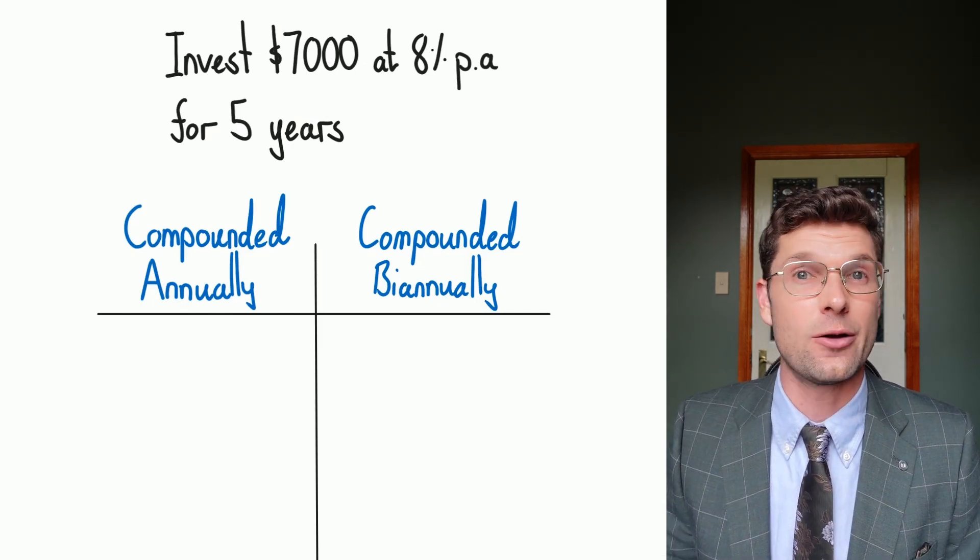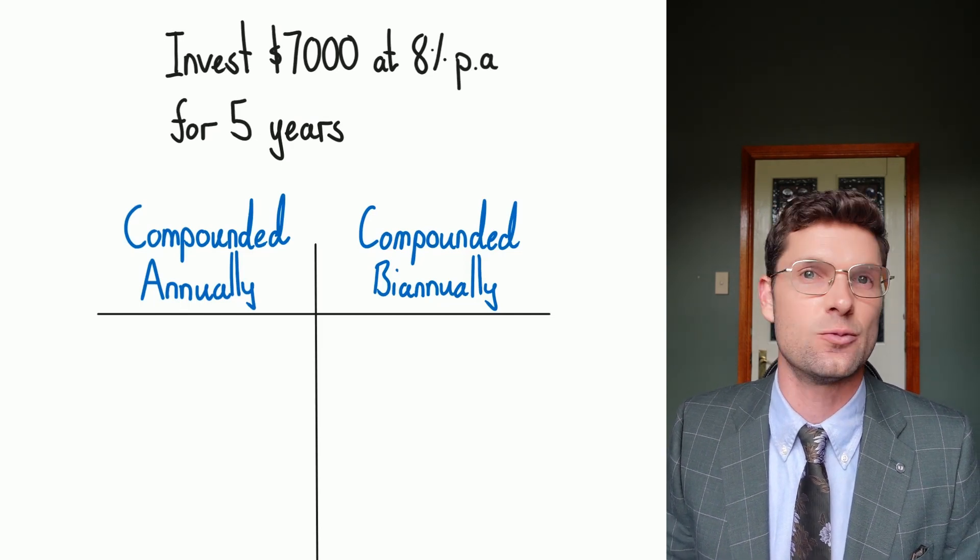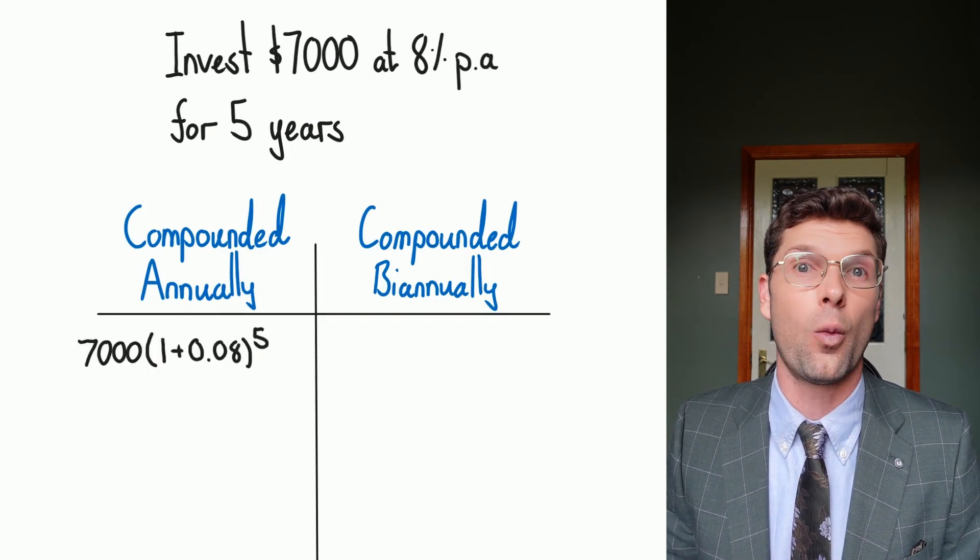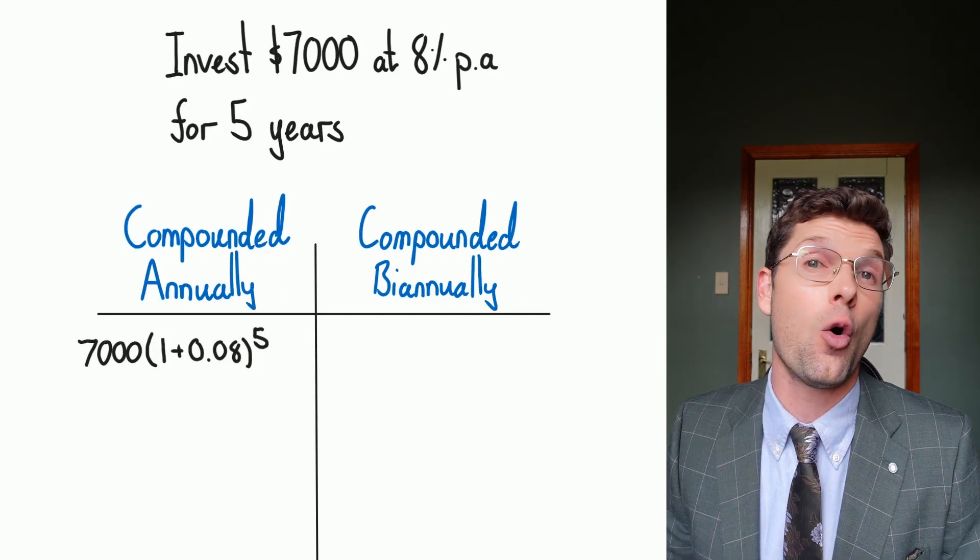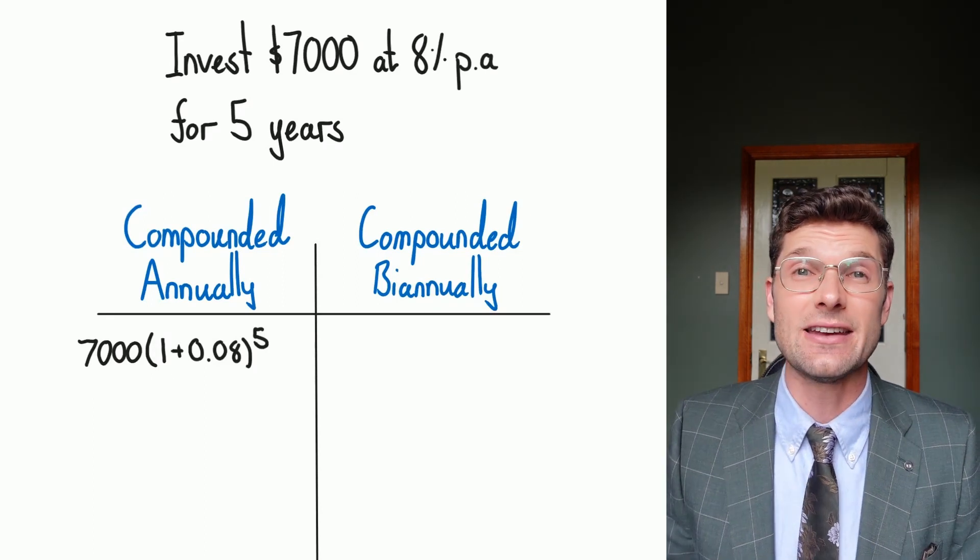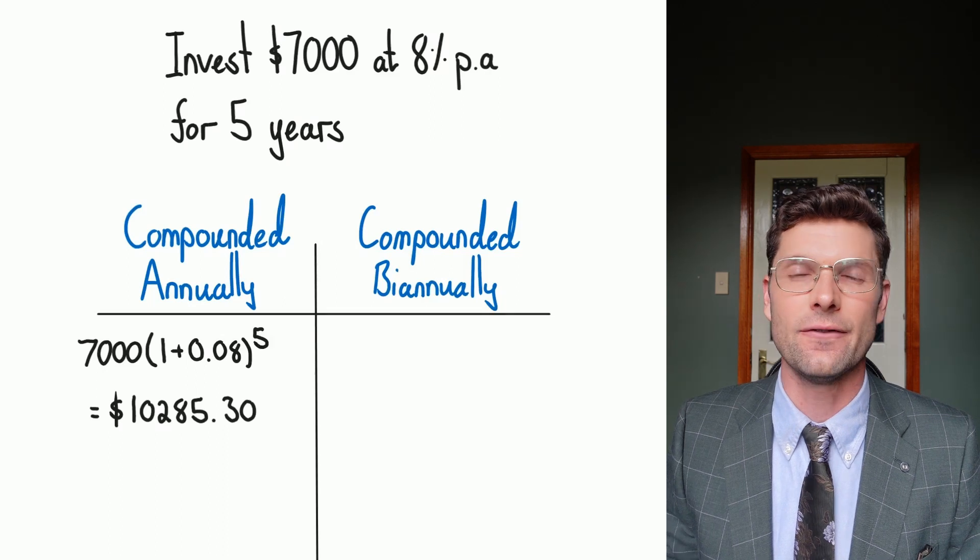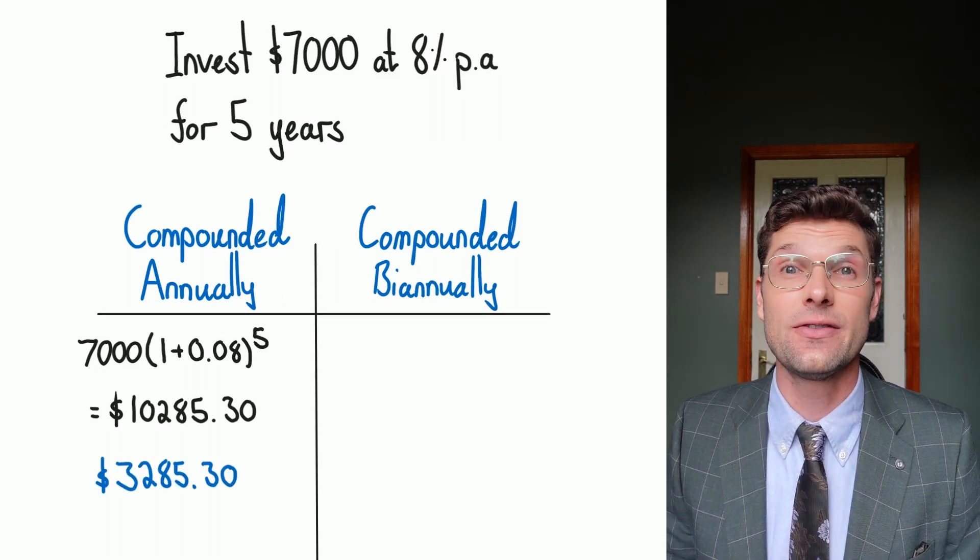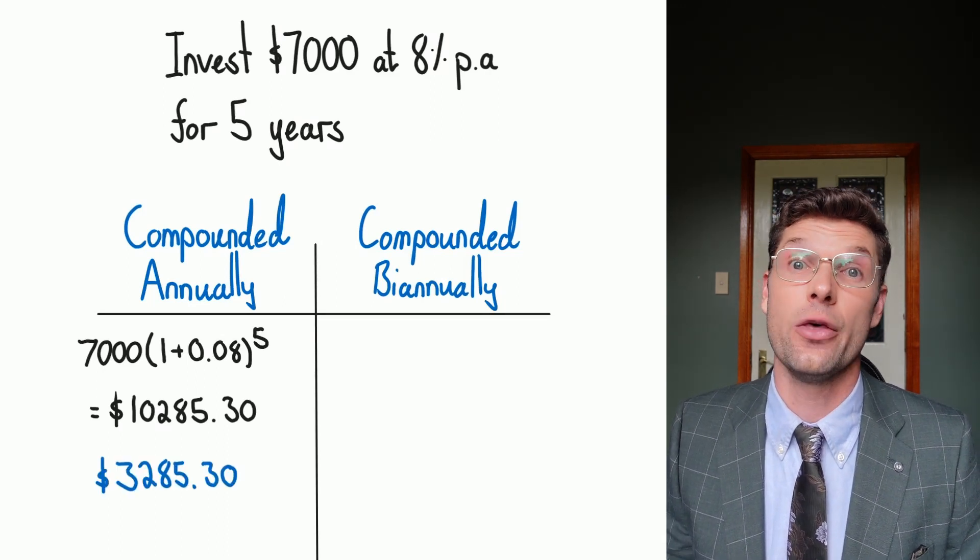The annual compound is exactly the same as we looked at in the last lesson. We've just got 7000 bracket 1 plus 0.08 all to the power of 5. If you throw that into your calculator, you get the answer of $10,285, which means we've made about $3,285 worth of interest.